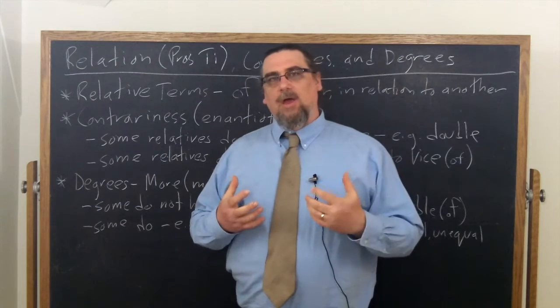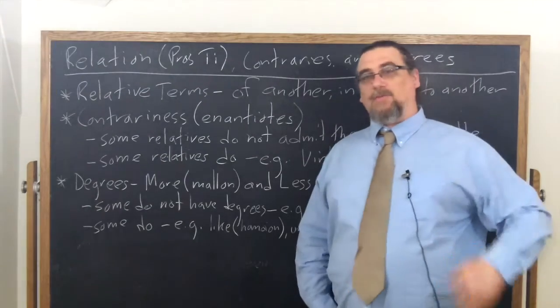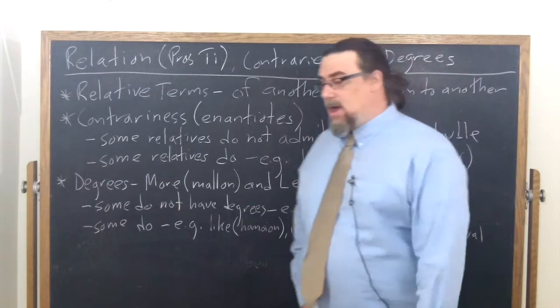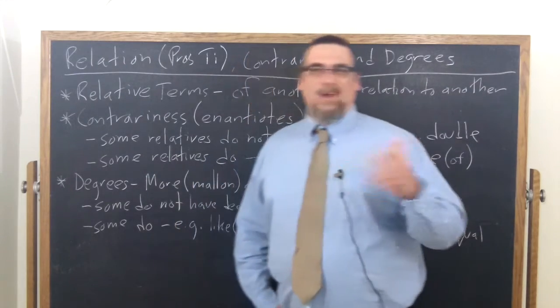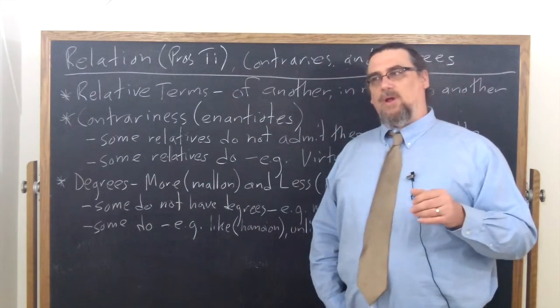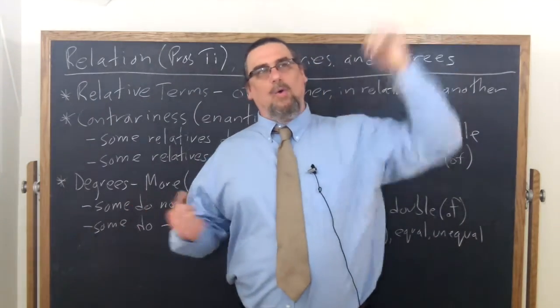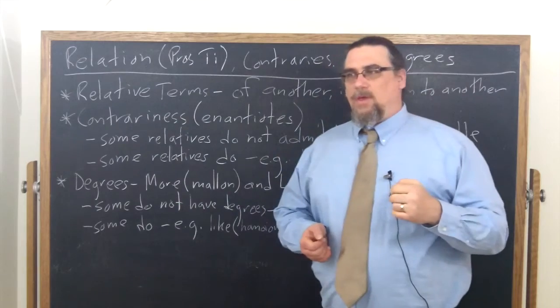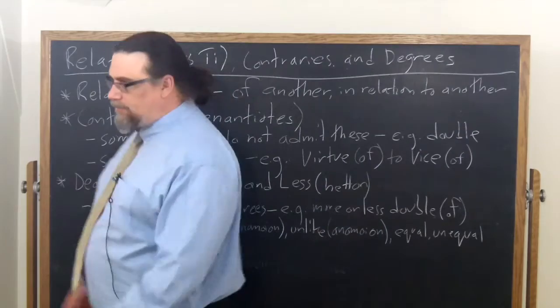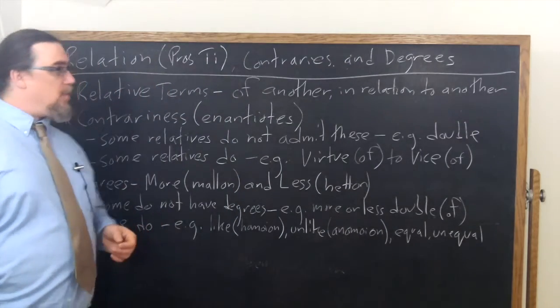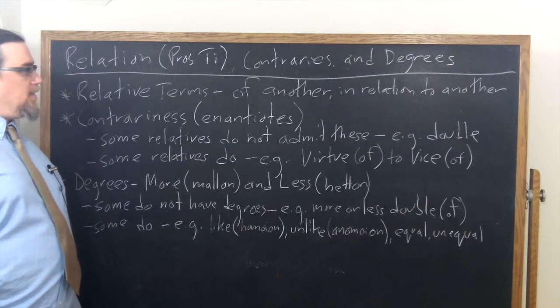And when we talk about contraries, usually what Aristotle has in mind, the examples that he typically brings up throughout the rest of this work, are things like black and white, sweet, salty, actually sweet to bitter when it comes to taste. When it comes to notes, high and low, things along those lines: hot, cold, good, bad. Now in this case he's going to use virtue and vice and we'll talk about that in just a minute.